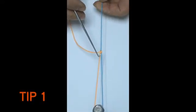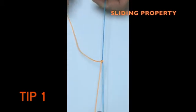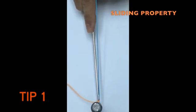Any configuration of knot will retain its sliding property if the post limb is gripped under tension and in a straight line.